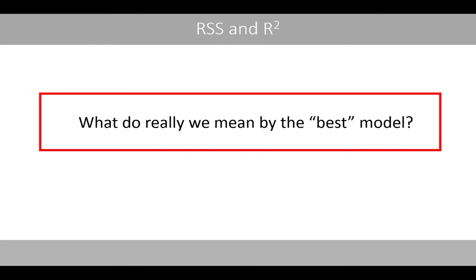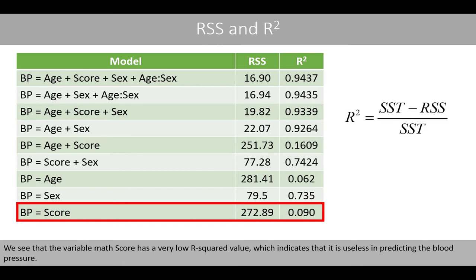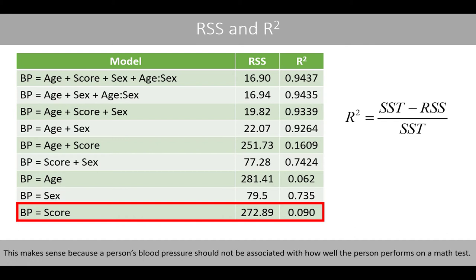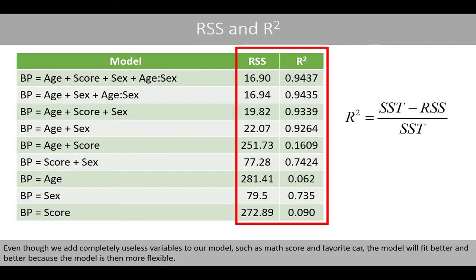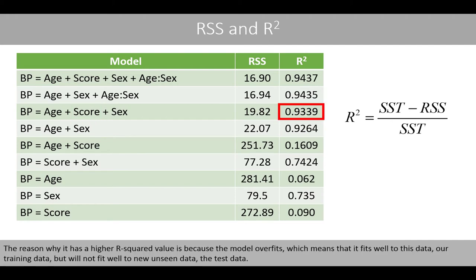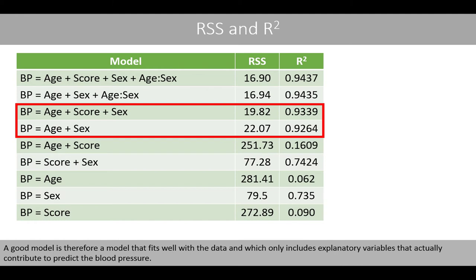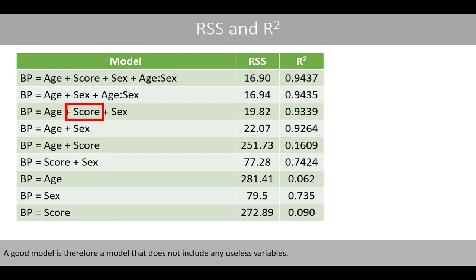So, what do we really mean by the best model? The variable math score has a very low R-squared value, which indicates that it is useless in predicting blood pressure — a person's blood pressure should not be associated with how well a person performs on a math test. Even though we add completely useless variables to our model, such as math score and favored car, the model fits better and better because the model becomes more flexible. A model including useless variables is not a good model. The reason it has a high R-squared value is because the model overfits — it fits well with the training data but will not fit well with new unseen test data. A good model fits well with the data and only includes explanatory variables that actually contribute to predicting the blood pressure.